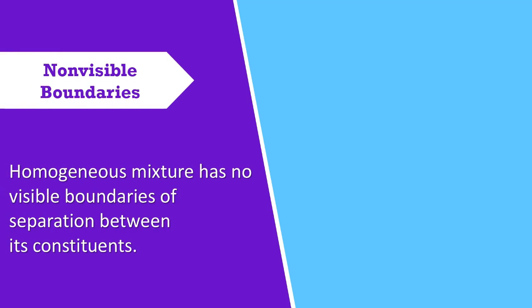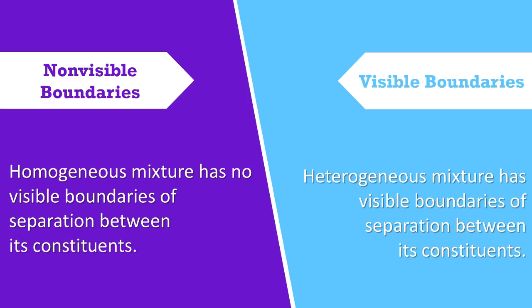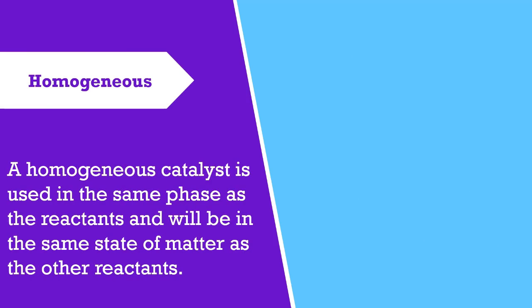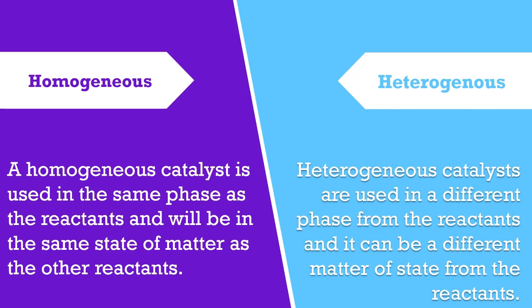Homogeneous mixtures have no visible boundaries of separation between their constituents. Heterogeneous mixtures have visible boundaries of separation between their constituents. A homogeneous catalyst is used in the same phase as the reactants and will be in the same state of matter as the other reactants.